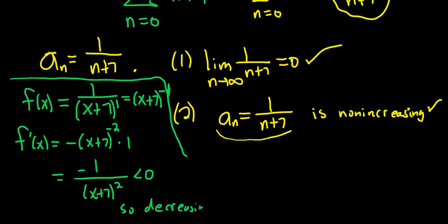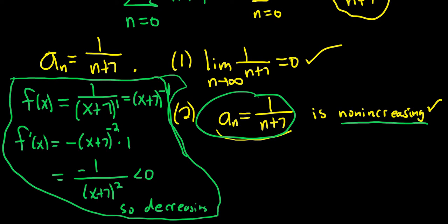You can see this is always less than 0, because the bottom is positive. So this is negative, so it's decreasing. That shows that this is also decreasing. In other words, it's not increasing. Remember, not increasing means decreasing or staying the same.